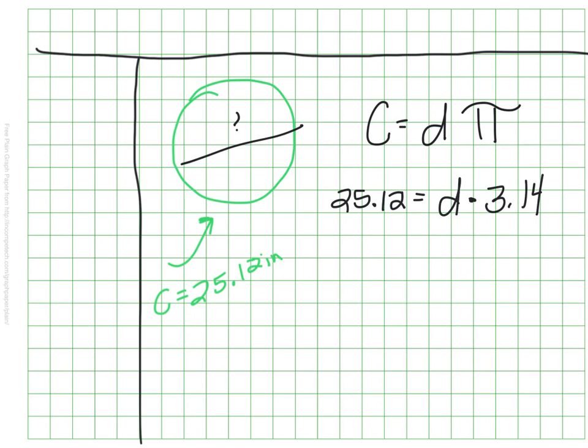So to do this, we're actually going to backtrack, we're going to use division. So we're going to take our circumference and divide it by pi. So you'll have to take your 25 and 12 hundredths and divide it by pi to get your diameter.